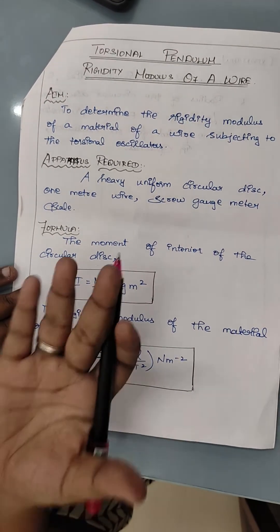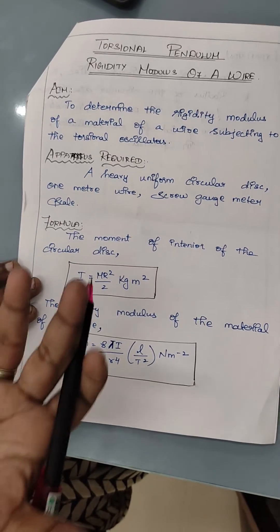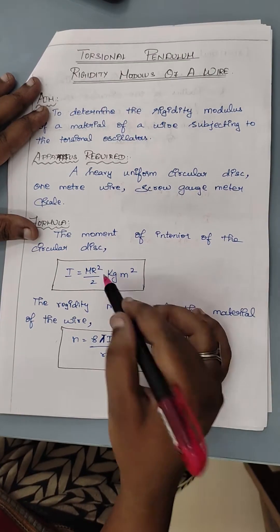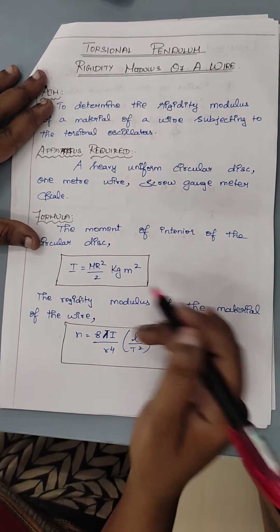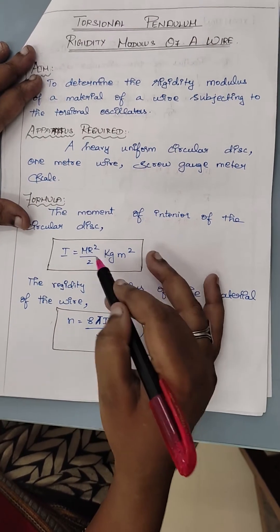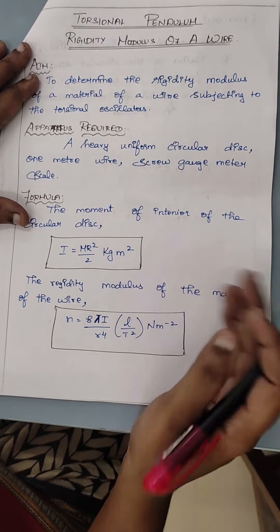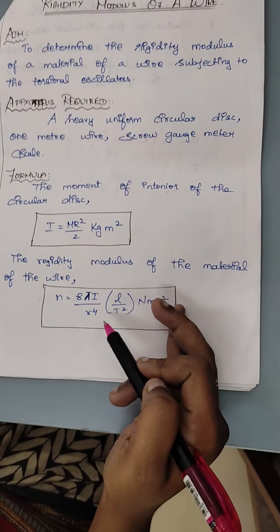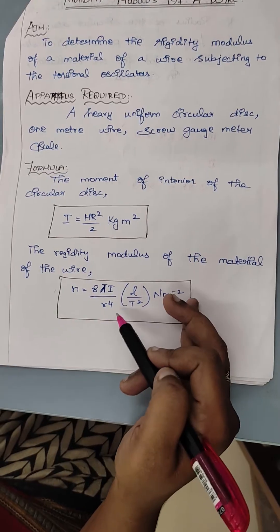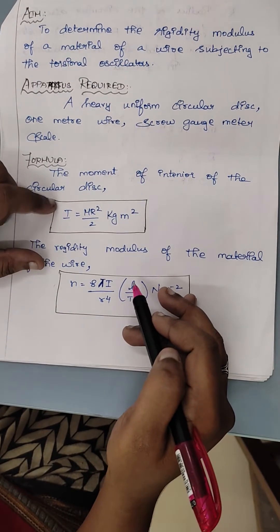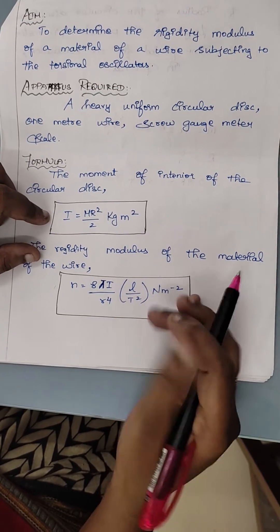M is the mass of the torsion disc. You can find the circumference of the disc to get the R value, or use any other means to measure the radius. The rigidity modulus formula is N = 8π·I / (R⁴) × (L / T²), where R here is the radius of the wire.